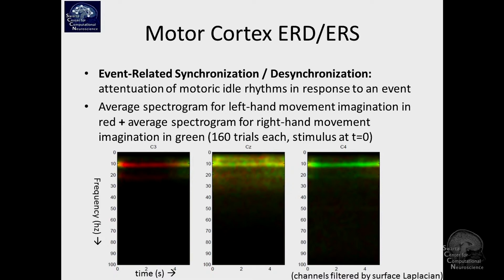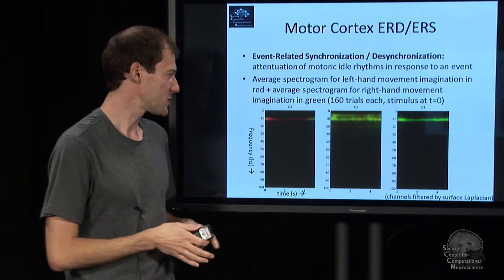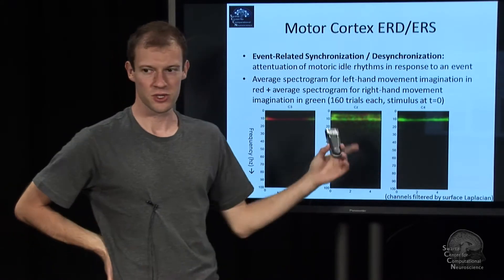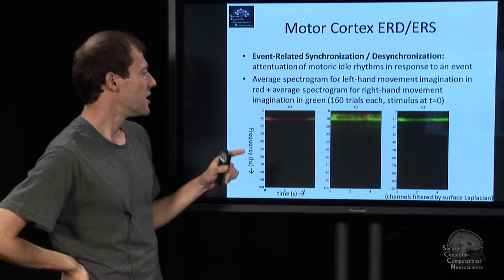This is actually an average of many trials. And secondly, these are not just the channel C3, which is here, and CZ, which is here, and C4, which is here. It's the channel with the surrounding channel subtracted. So this is already spatially filtered using a surface Laplacian. That's why the contrast is relatively good.